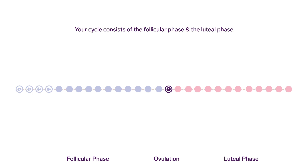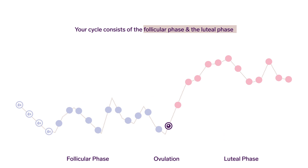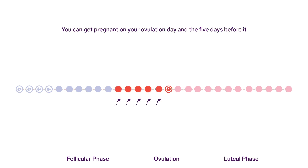Your cycle consists of two phases: the follicular phase, where your temperature is lower, and the luteal phase, where your temperature is higher. You ovulate between the follicular and luteal phase. You can get pregnant on your ovulation day and five days before it, because sperm can survive in your system for up to five days.